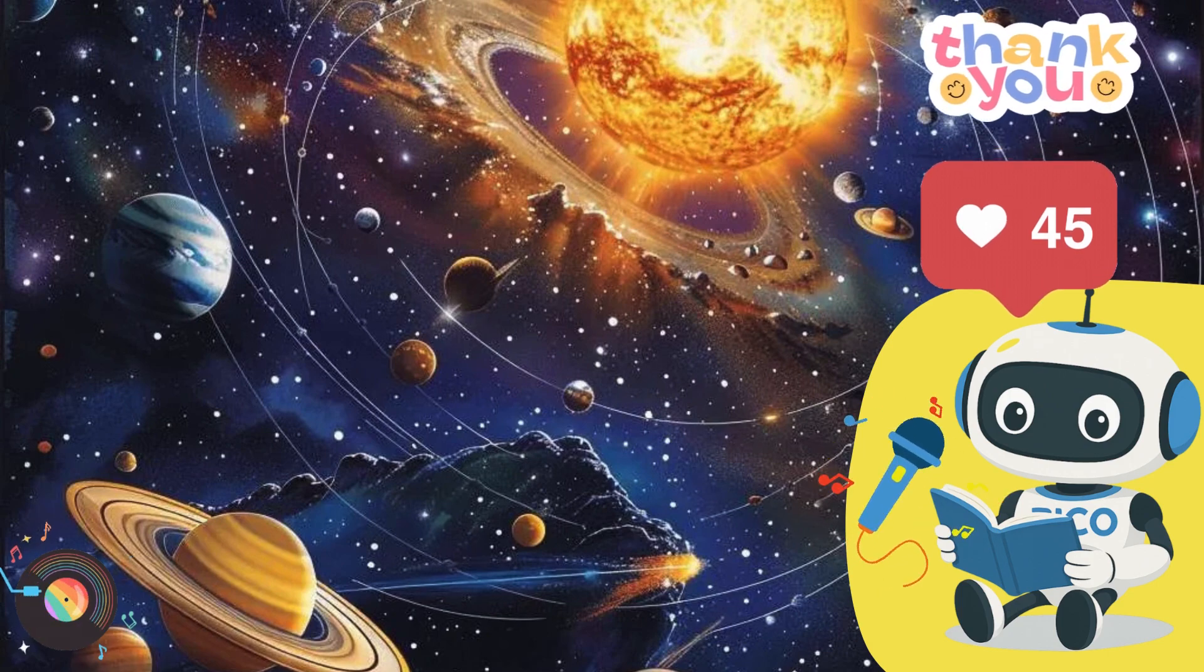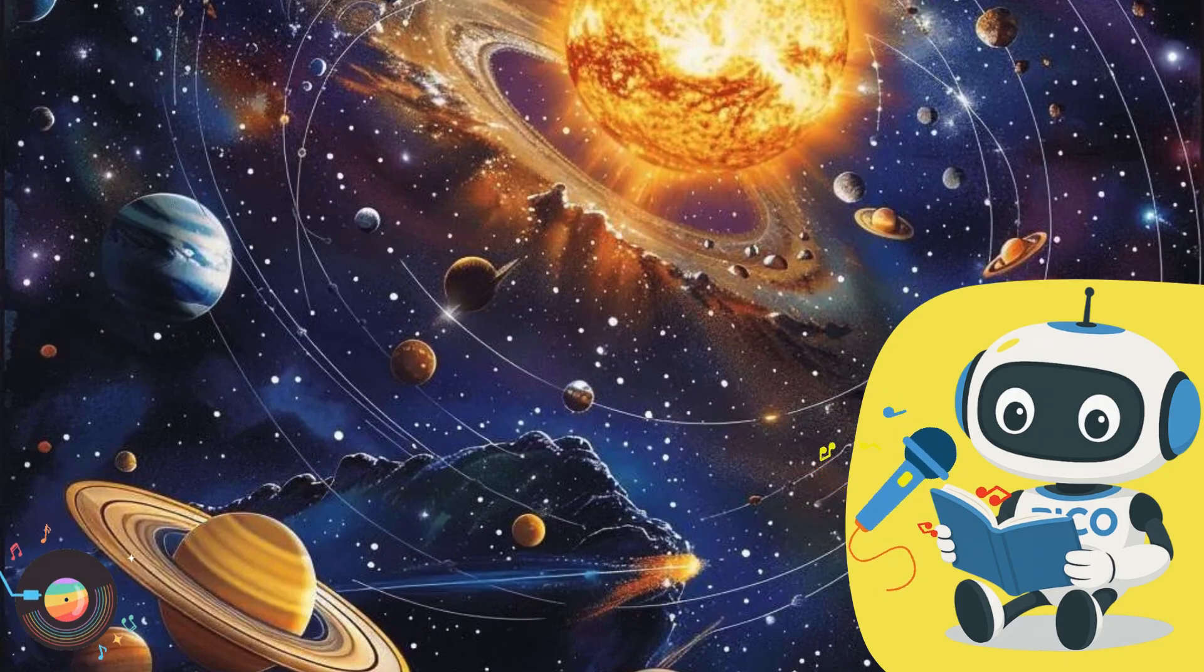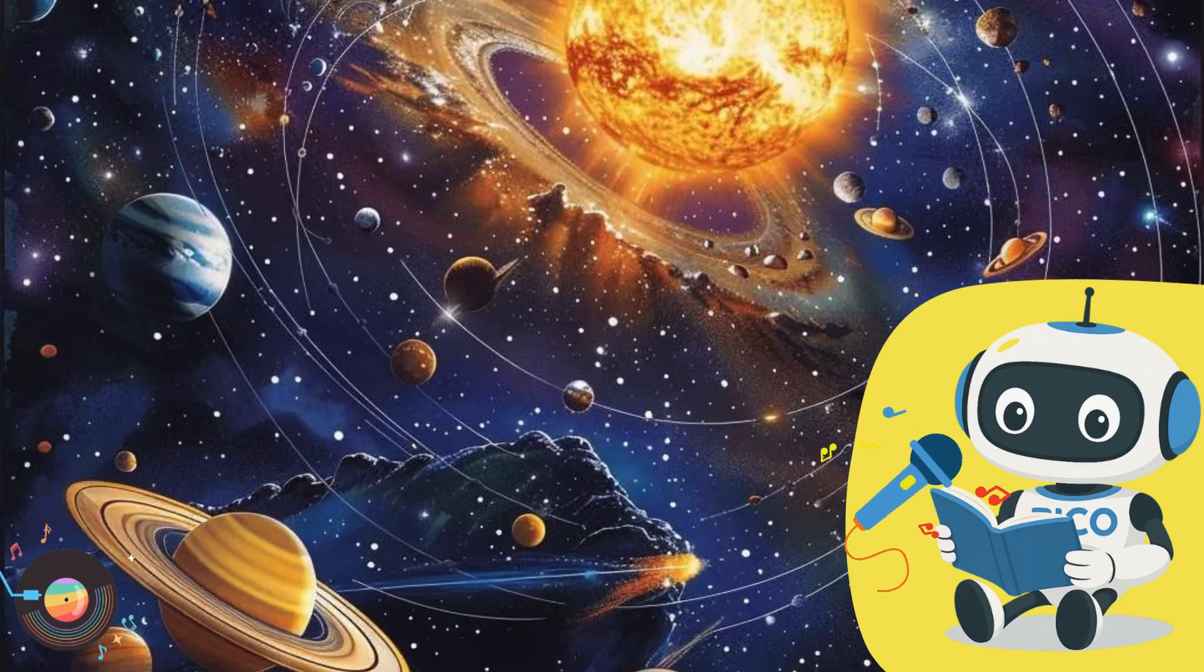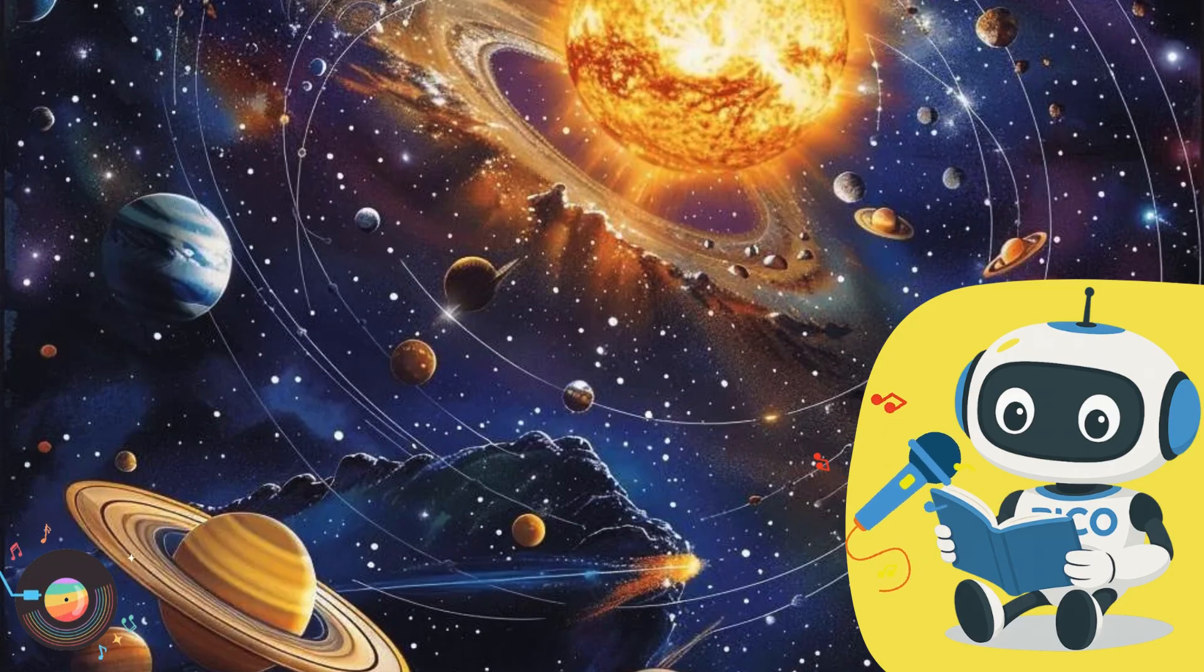Their mission was simple: to explore and document the solar system's secrets. Their journey had started weeks ago, taking them past Mercury's scorched surface and Venus's misty clouds. Now they were gliding past Mars, its red soil glowing faintly under the sunlight.